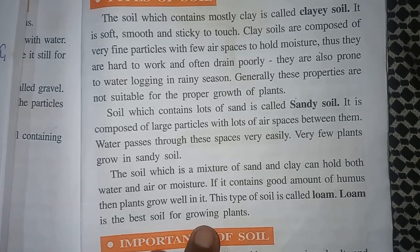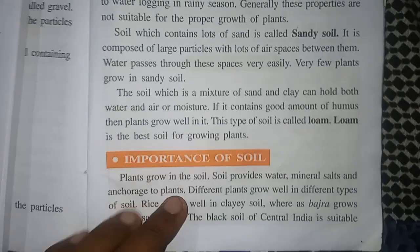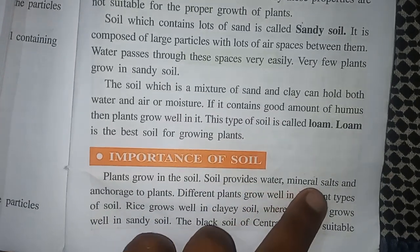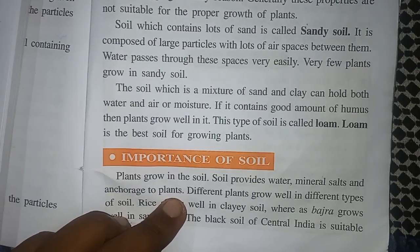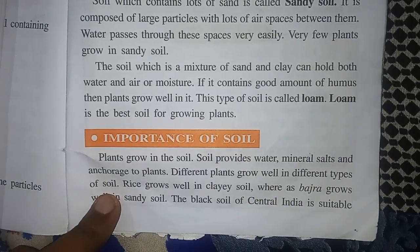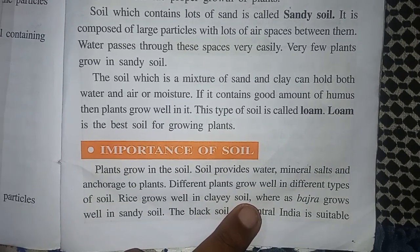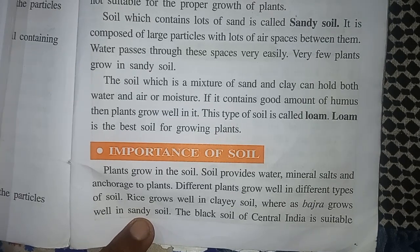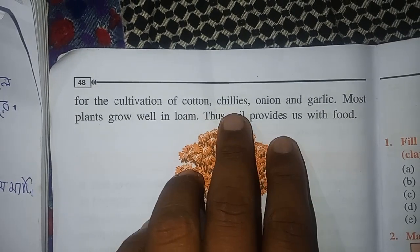Loam is the best soil for growing plants. Plants grow in the soil. The soil provides water, minerals, salts, and nutrients to plants. Different plants grow well in different types of soil. Rice grows well in clay soil. Some crops grow well in sandy soil. The black soil found in central India is suitable for the cultivation of cotton, chilies, onion, and garlic.